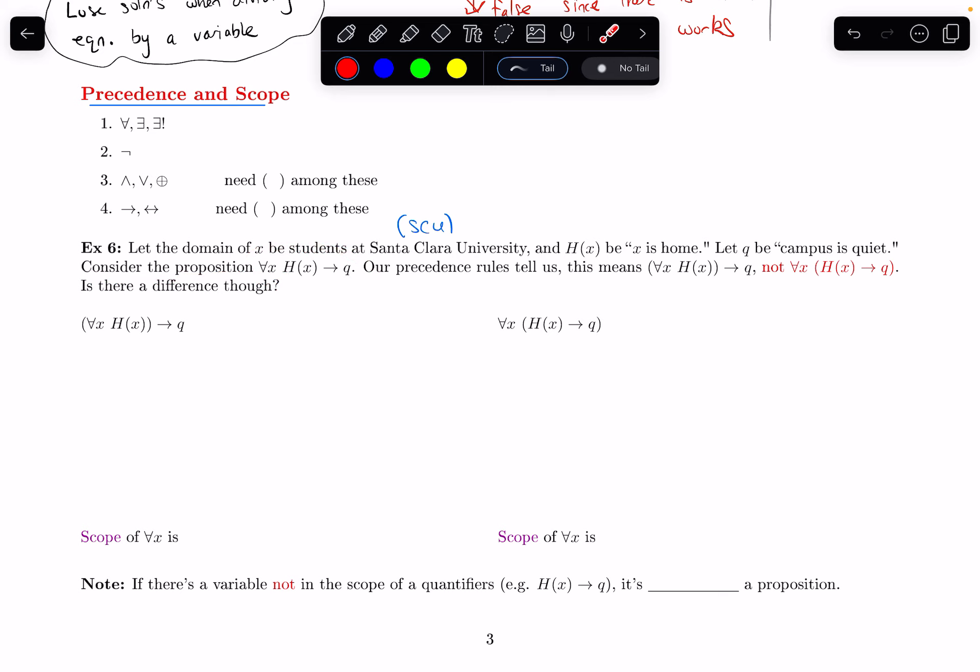So I see a for all here, I see a implies here. Our precedence rules say that the for all takes precedence. So that means I can view this as doing the for all X, H(x) first. So putting a parentheses around that.